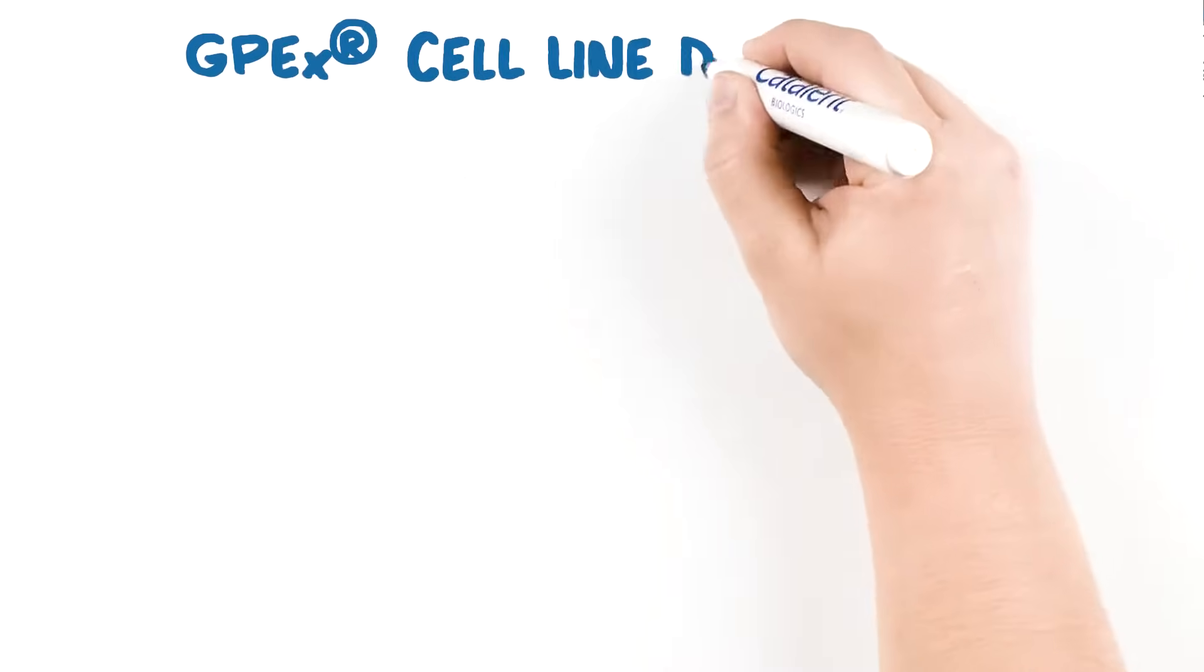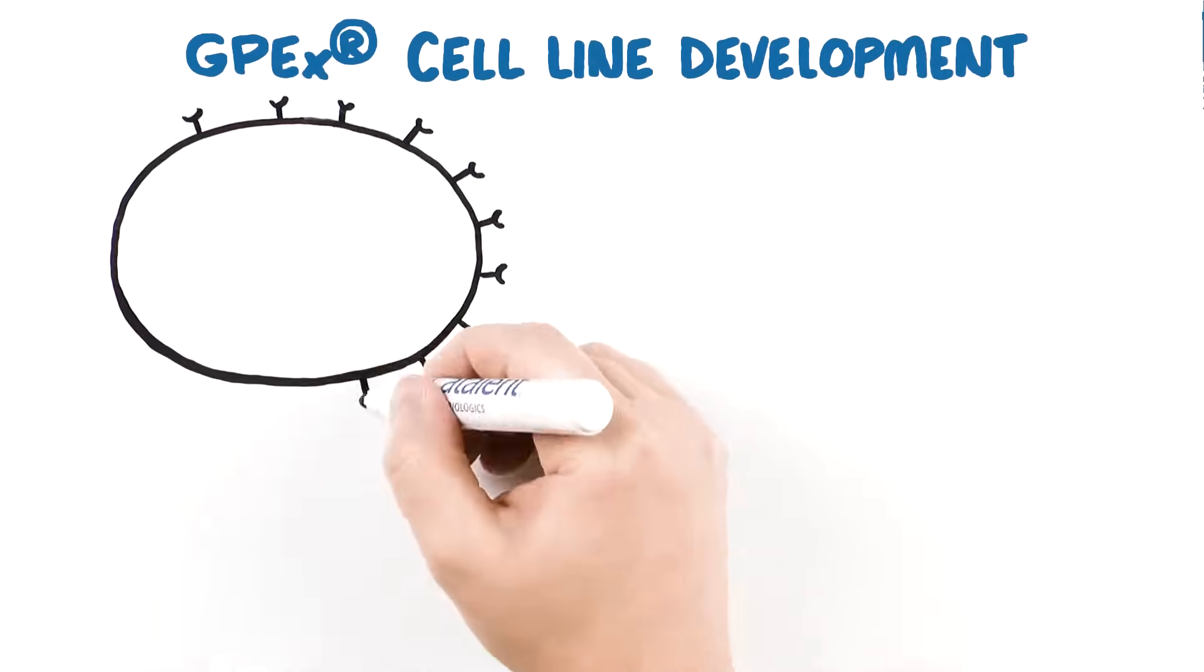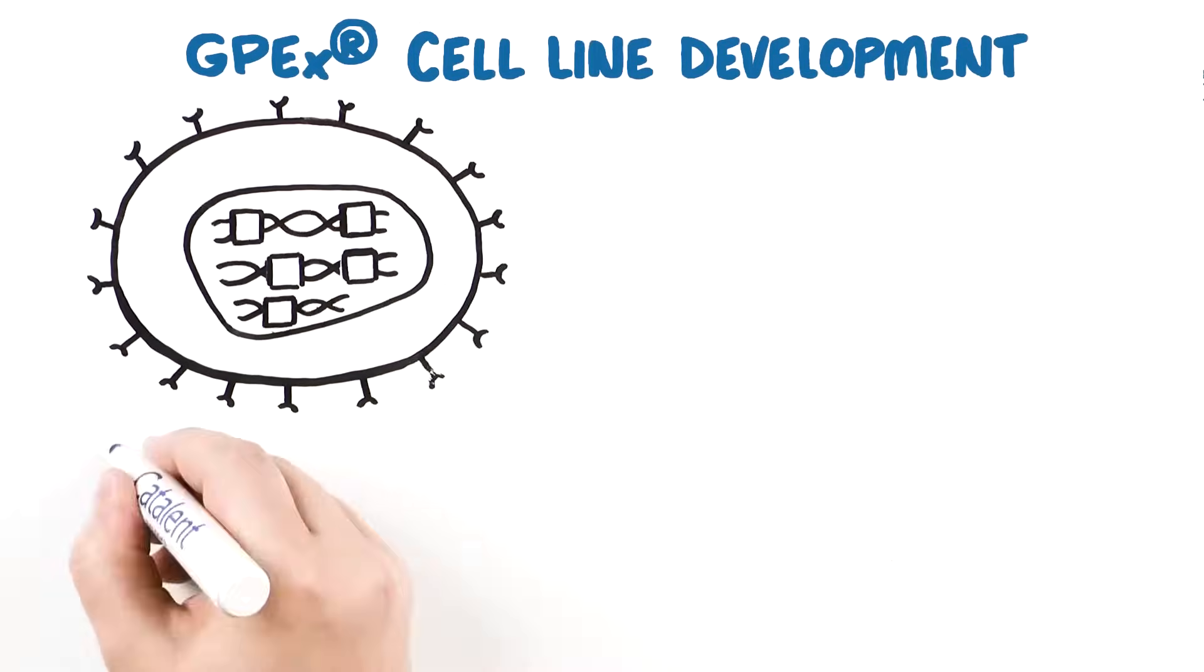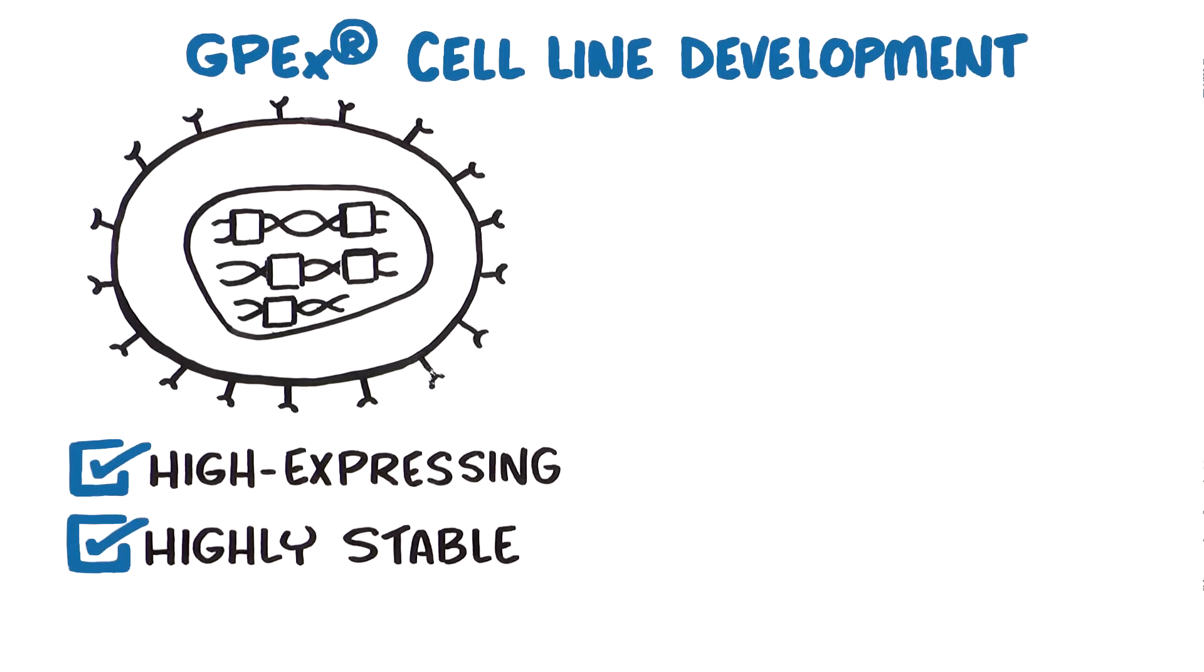Catalin's proprietary GPX cell line development technology is a proven platform that generates high-expressing, highly stable cell lines.